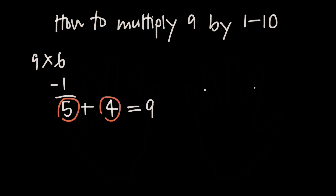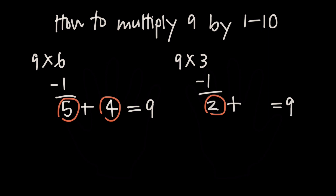Let's do another example with this method: 9 times 3. We subtract 1 from 3 and get 2. So 2 is our first number. Then what do we add to 2 to get 9? Well, 2 plus 7 is 9, so 7 is our second number. That means 9 times 3 is 27.